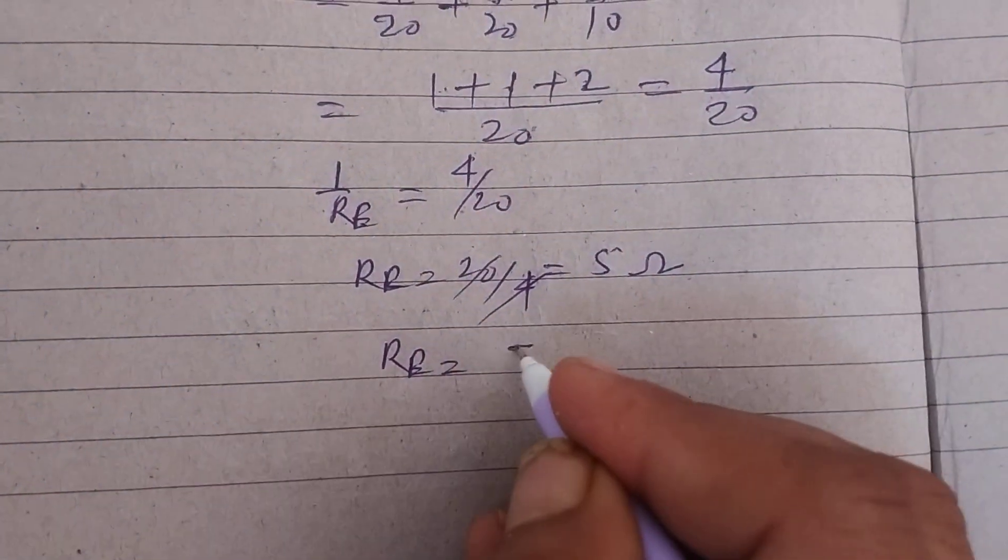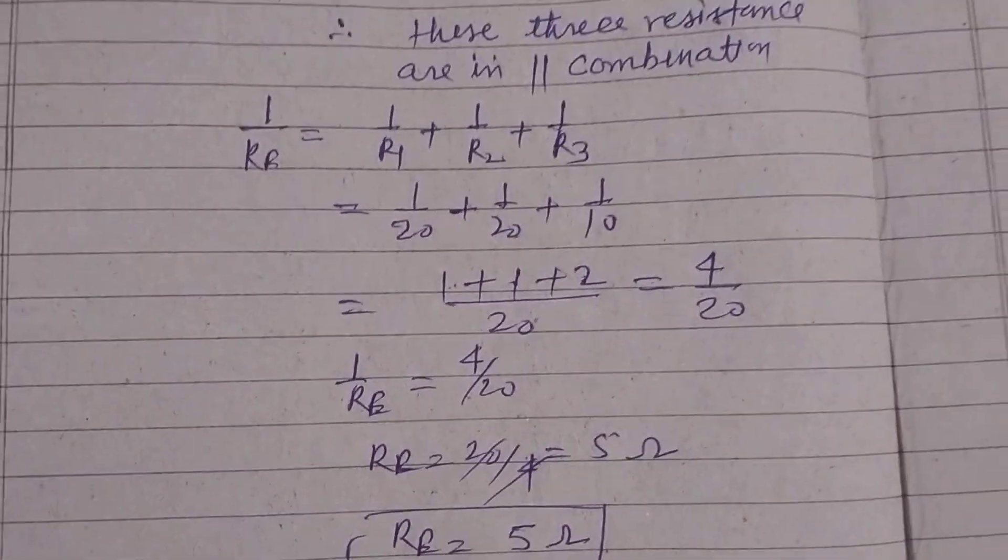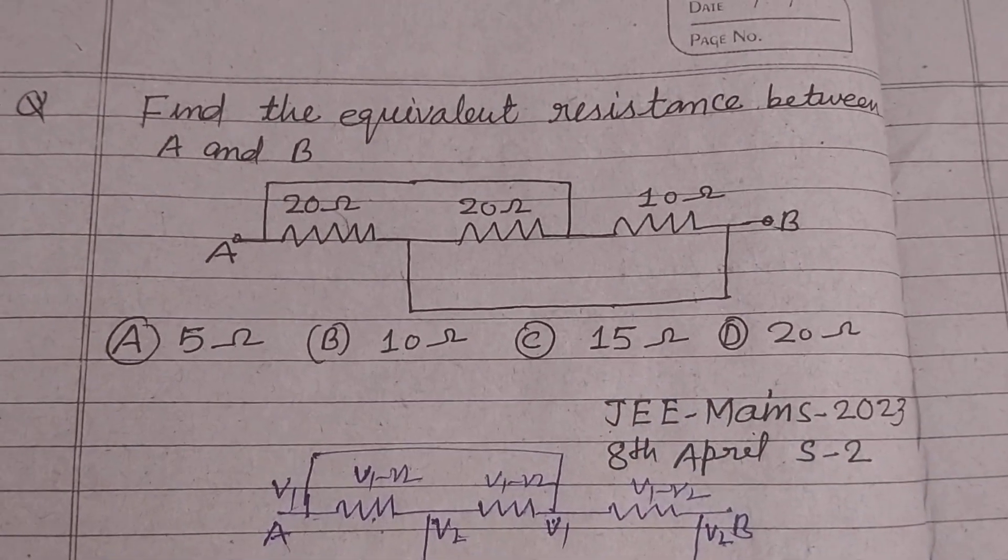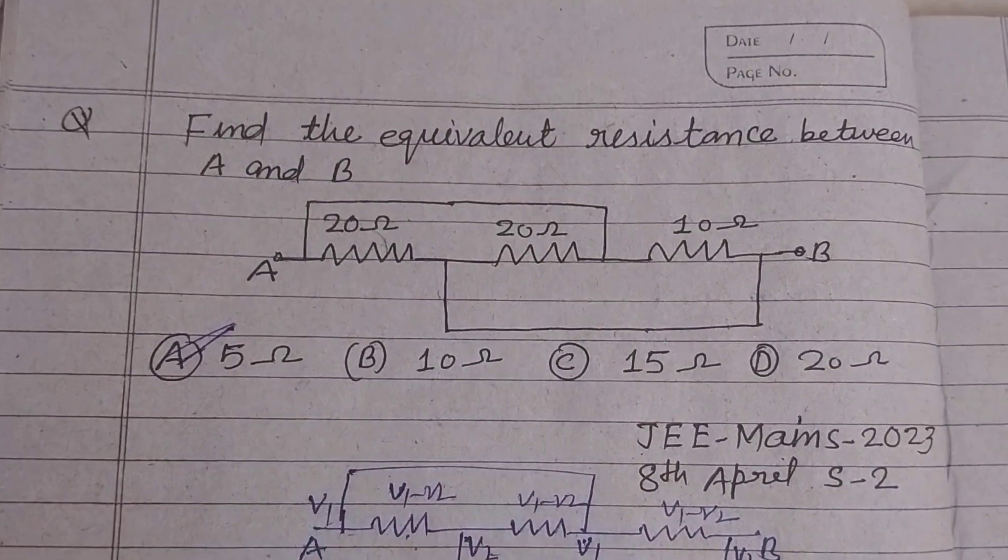So R_equivalent in this circuit is 5 ohms because all three resistances are in parallel combination. So students, the answer to this question is option A.